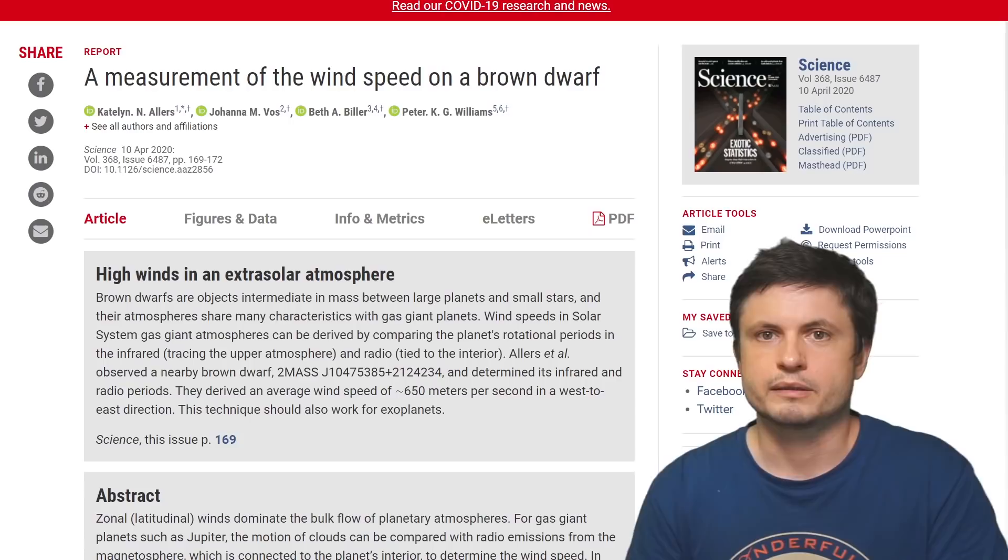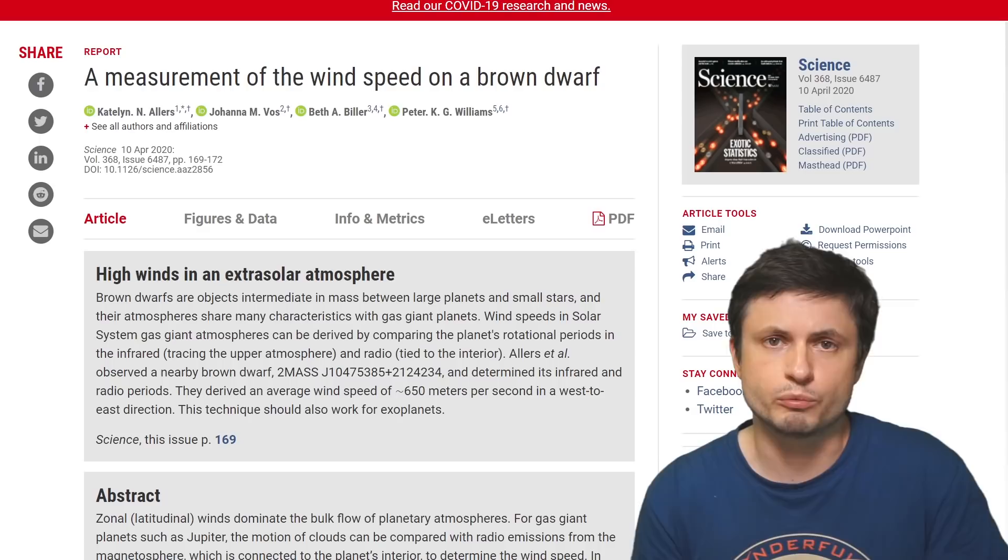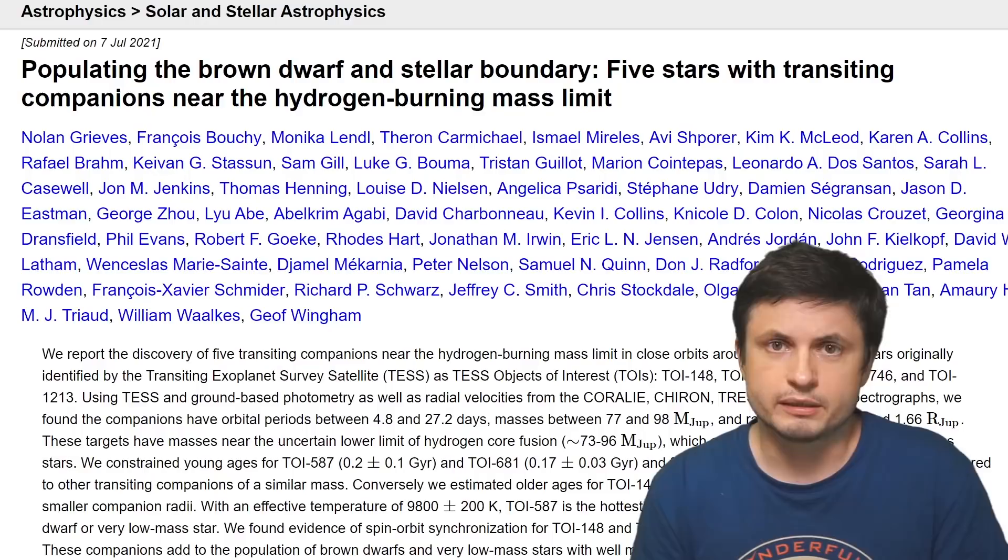And so for example, this study I discussed last year was able to discover a lot of patterns on the surface, and even measure the speed of wind, by measuring a lot of different radio emissions. Here the speed was about 650 meters per second, which is roughly 5 times faster than the wind speeds on Jupiter.